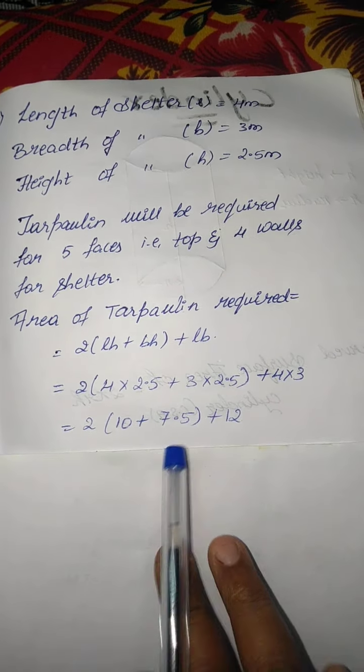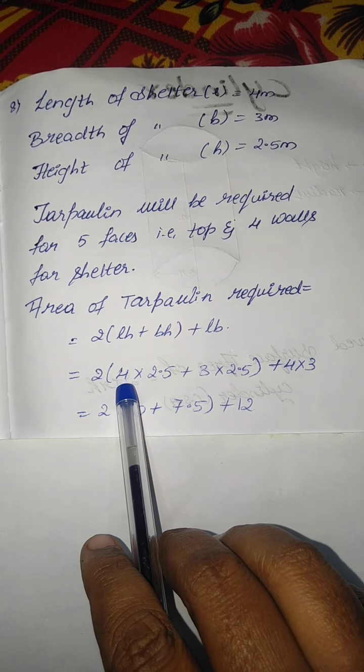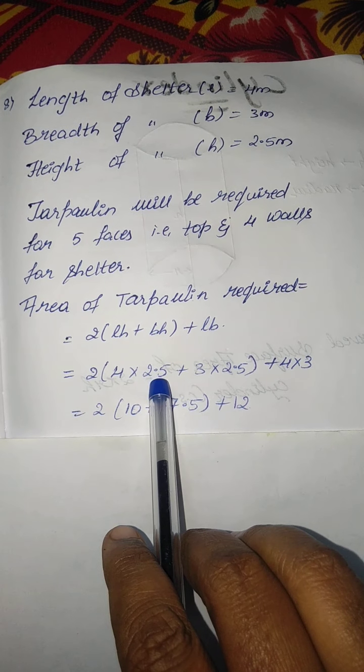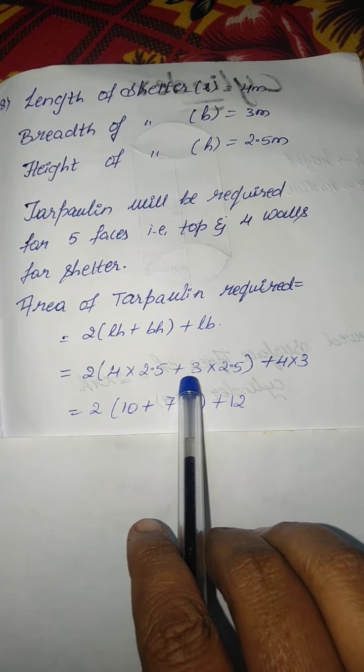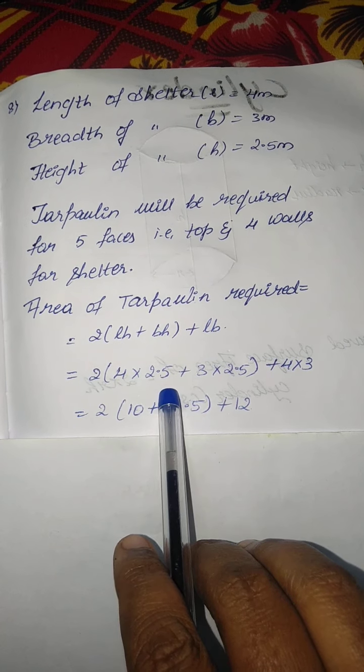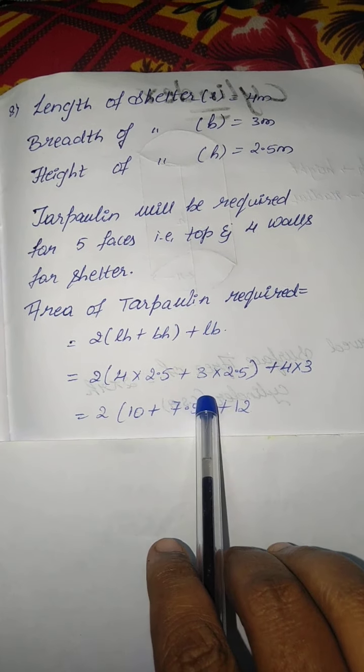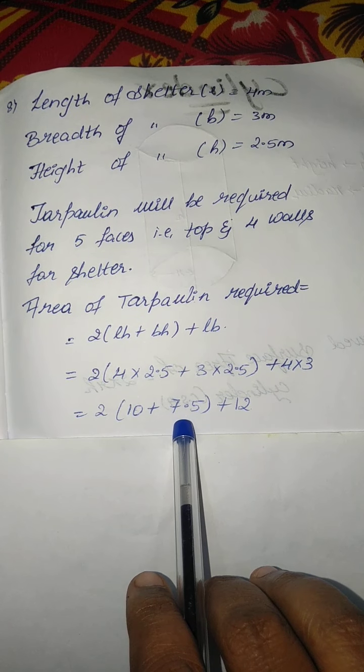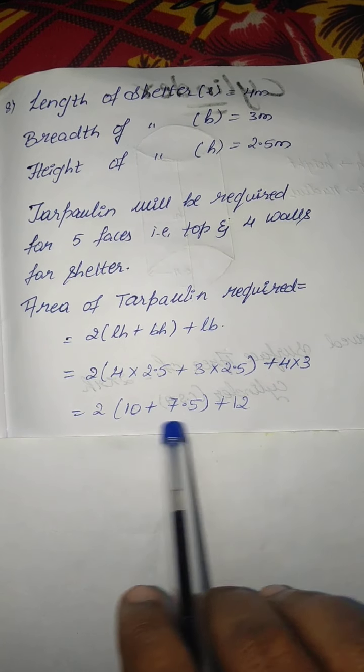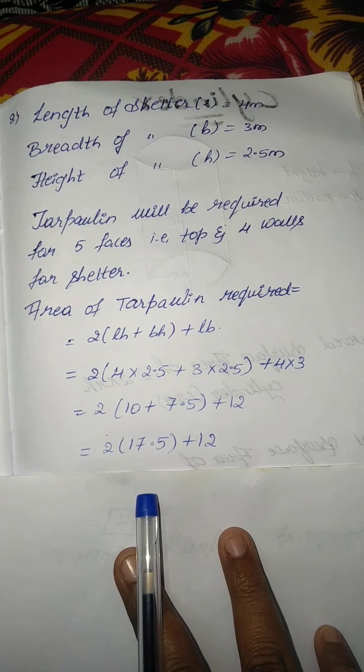Now I am going to substitute the values, children. Wherever there is l, I will write 4. Wherever there is h, I will write 2.5. And wherever there is b, I will write 3. On multiplication, 4 into 2.5 becomes 10, 3 into 2.5 becomes 7.5, 4 into 3 becomes 12. On adding 10 and 7.5, we will get 17.5.